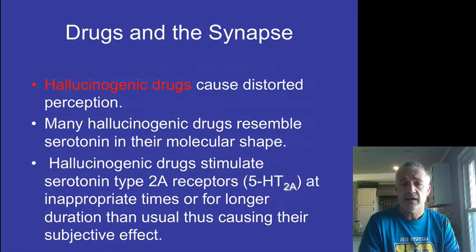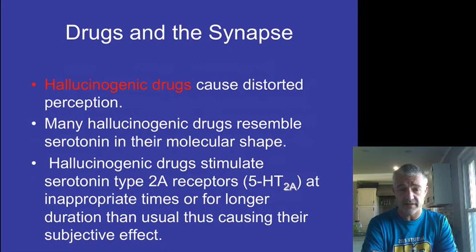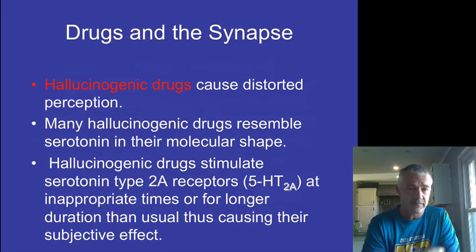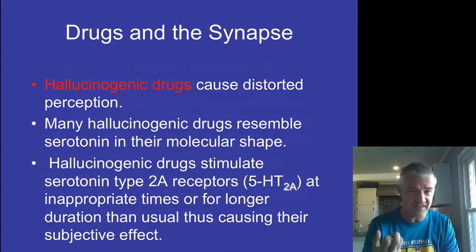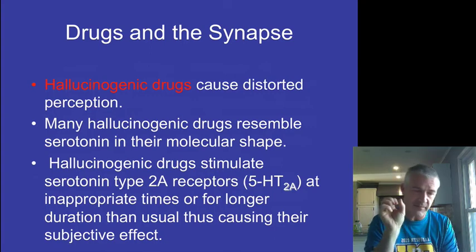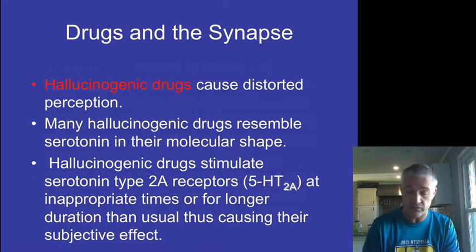Hallucinogenic drugs are very similar in shape to serotonin. Magic mushrooms — psilocybin — and LSD, lysergic acid, are very much serotonin mimics. They cause effects by greatly stimulating those synapses, leading to you seeing things that technically aren't there, but your experience is going to be very real to you. That gives you some ideas about these different neurotransmitters and what can happen if they're slightly altered. In normal functioning, these are being released in certain amounts and regulated tightly, but different drugs can obviously alter how they have their effects.